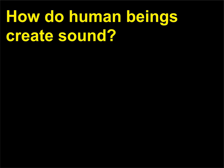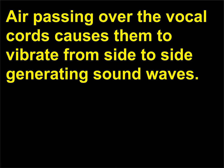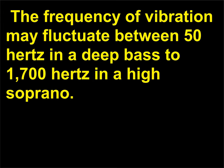How do human beings create sound? Air passing over the vocal cords causes them to vibrate from side to side, generating sound waves. The frequency of vibration may fluctuate between 50 hertz in a deep bass to 1700 hertz in a high soprano.